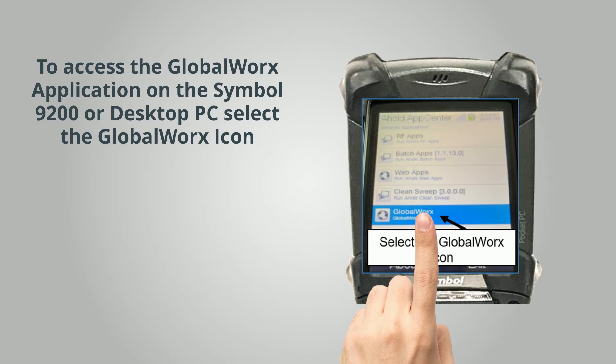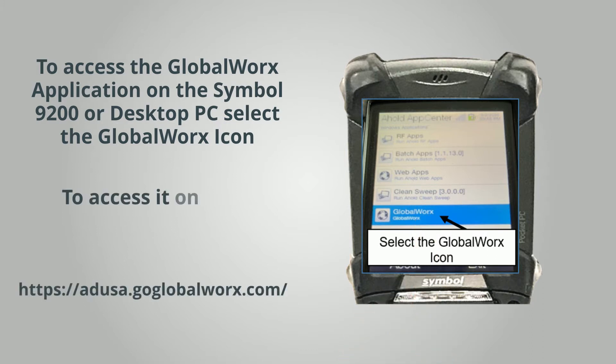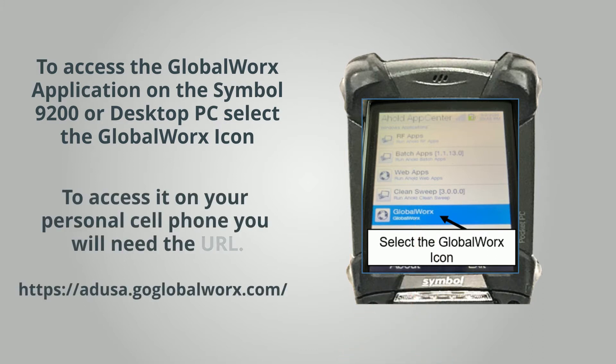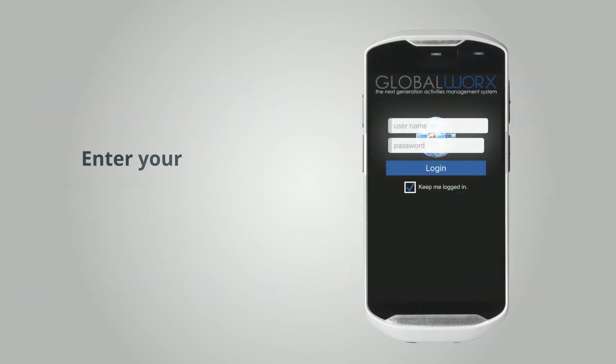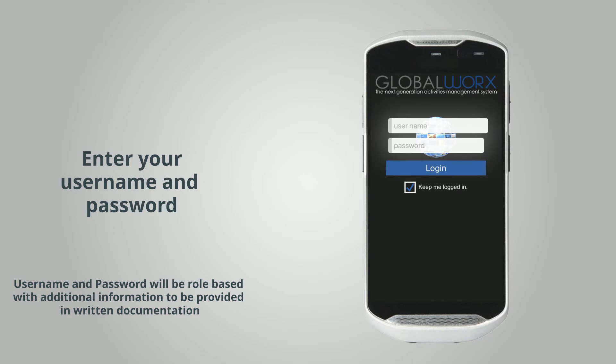To access it on your personal cell phone, you will need the URL. Once on the Global Works platform, enter your username and password.